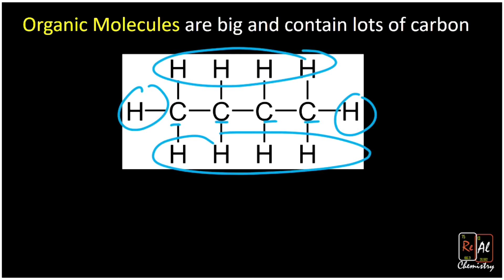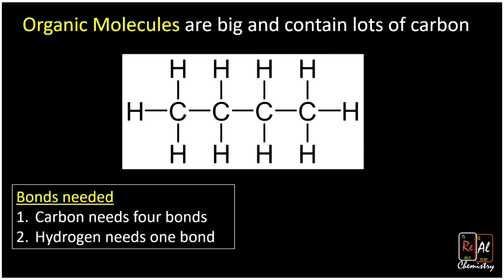Before we get started, two really important rules for you to know. One is that carbon always wants to have four bonds — carbon needs four bonds. Notice here, if I look at our first carbon, it has one bond to another carbon, and then one, two, three bonds to hydrogen, adding up to four. Or let's take one of the carbons in the middle — notice it has one, two bonds to other carbons. And since it needs four bonds, it's going to have two hydrogens off of it.